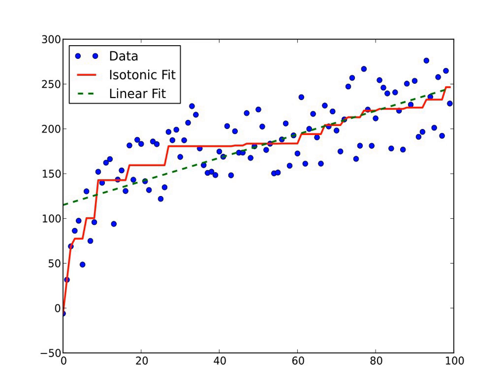The isotonic estimator g minimizes the weighted least squares-like condition: min g in A, sum i equals 1 to n of w_i times (g(x_i) minus f(x_i)) squared, where A is the set of all piecewise linear, non-decreasing, continuous functions and f is a known function.